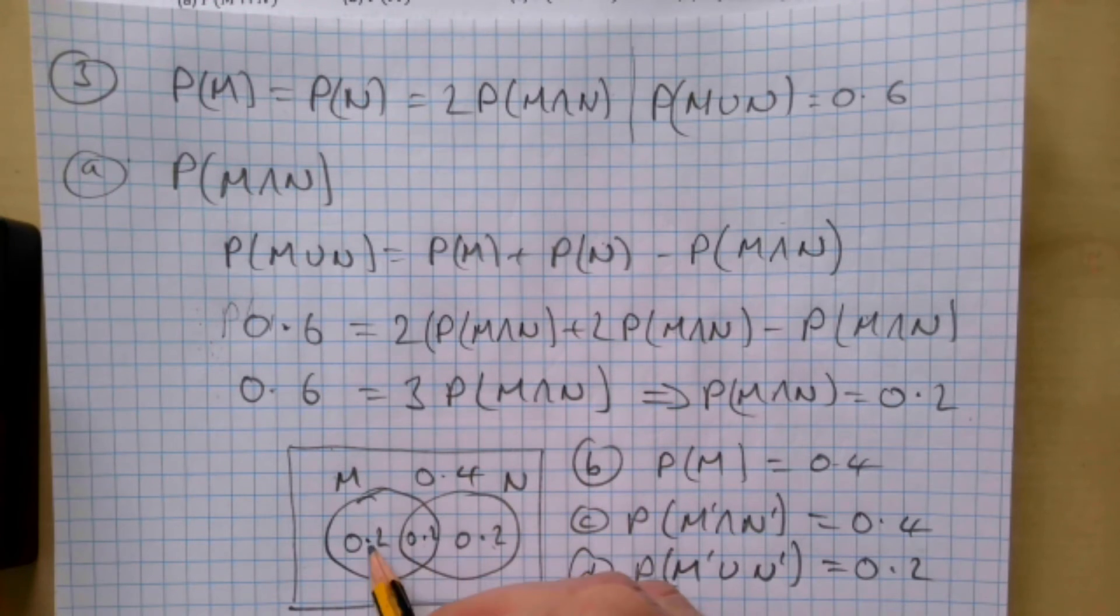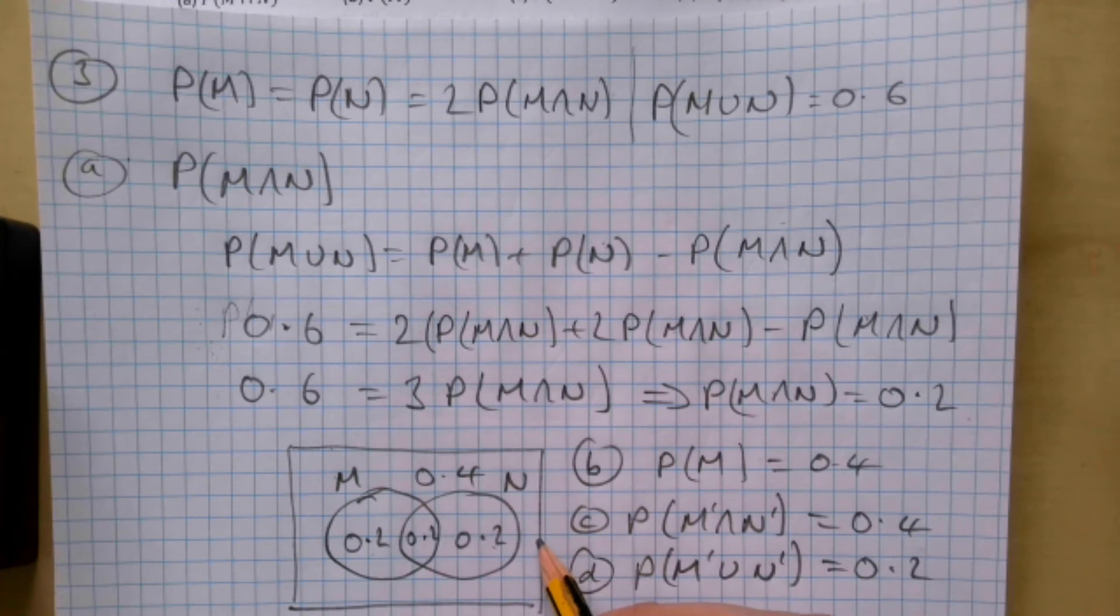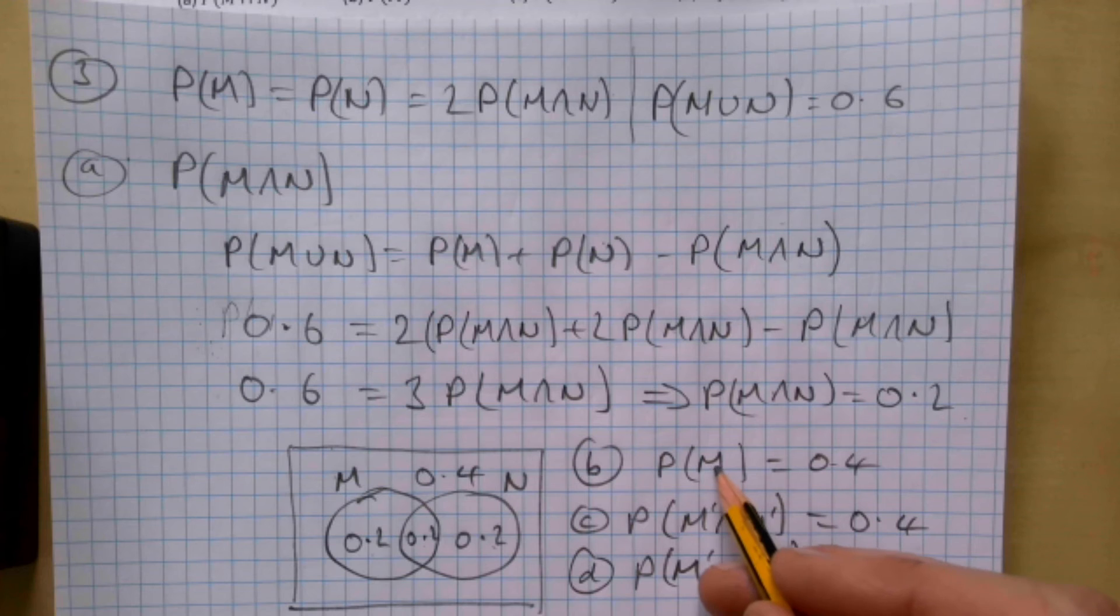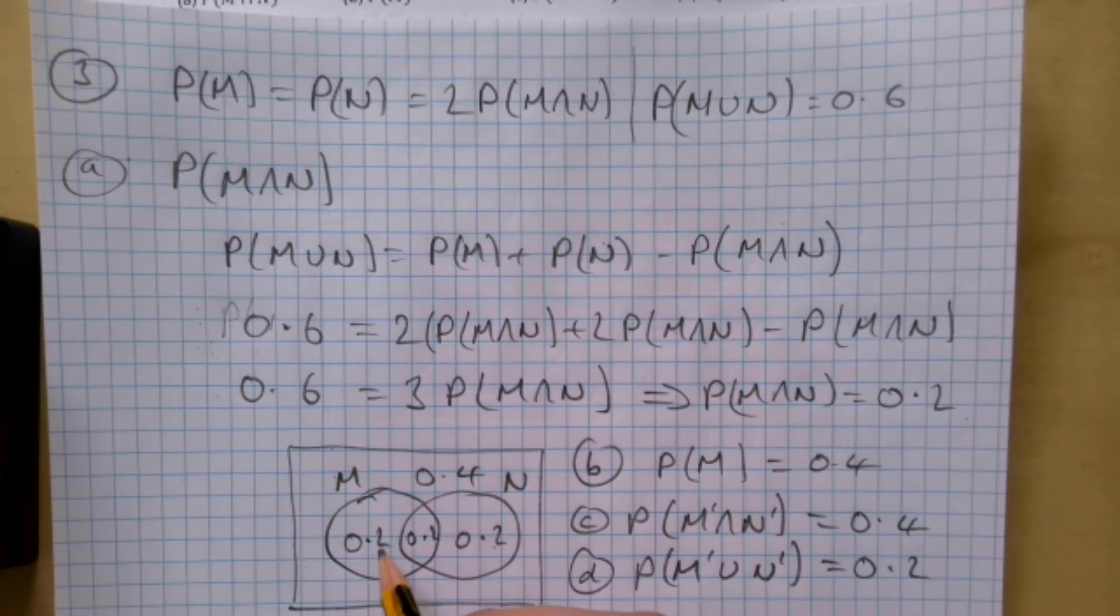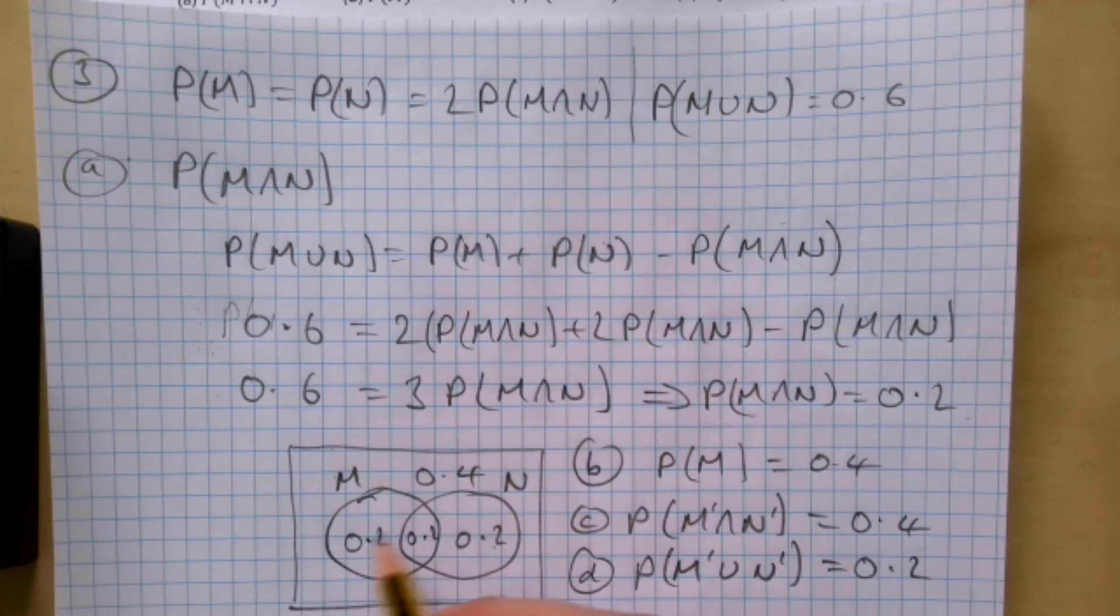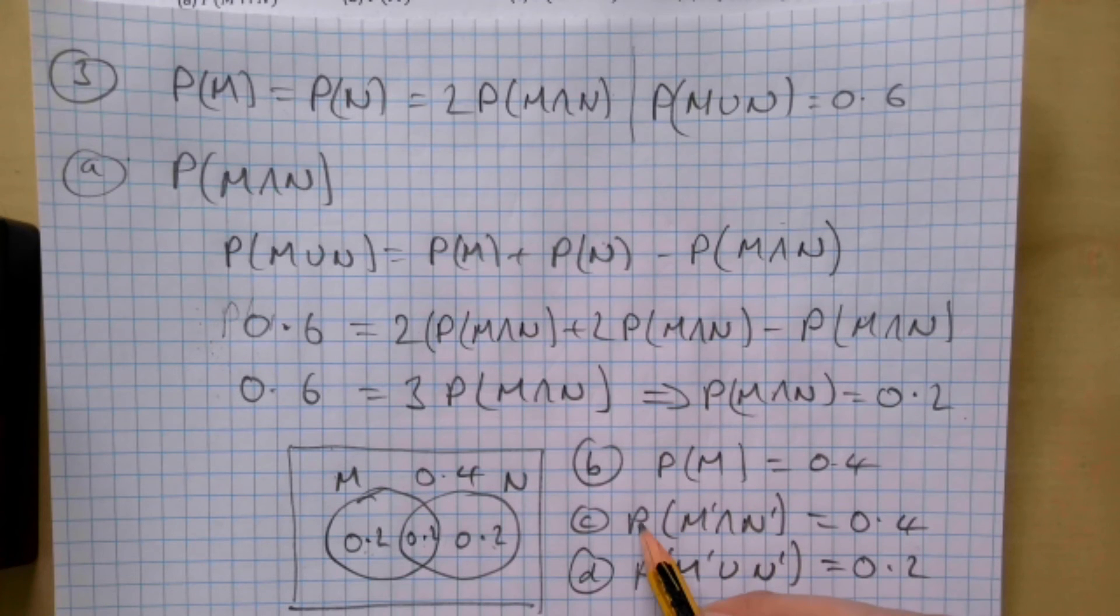the probability of M - that's easy, 0.4, which is 0.2 plus 0.2. And the probability of not M and not N, so anything that's not in either of the two circles, is going to be 0.4. Part d is